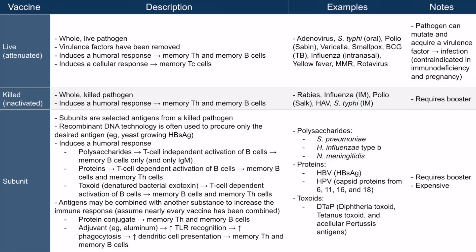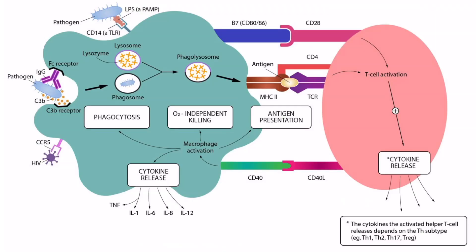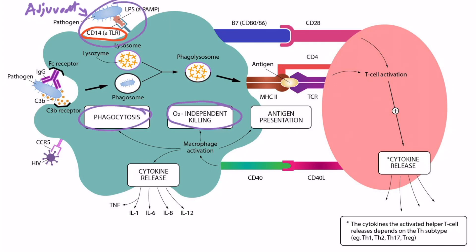Adjuvants such as aluminum-based compounds have a variety of mechanisms that maximize the immune response to a vaccine. They increase toll-like receptor recognition, which means increased phagocytosis, more dendritic cell presentation, and more memory helper T cell and memory B cell formation. CD14 is an example of a toll-like receptor; aluminum adjuvants make it easier for toll-like receptors to bind to pathogenic antigens, leading to more phagocytosis, more antigen presentation, and more T cell activation.